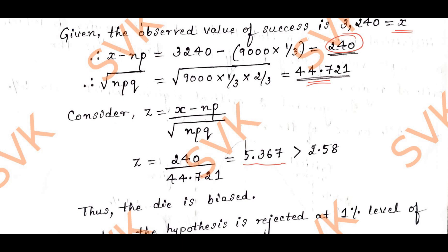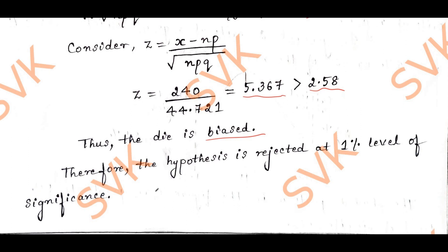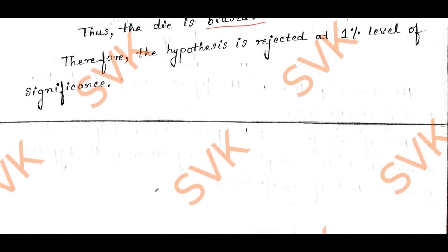At 1% level, the critical value is 2.58. Since z equals 5.367, which is greater than the critical value 2.58, therefore the hypothesis is rejected at 1% level of significance. This is how we solve question number 6b.